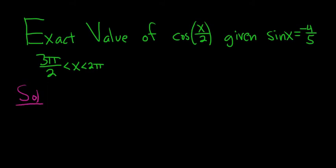In this problem we have to use the half angle identities. The half angle identities for cosine are cosine of x over 2 equals plus or minus the square root of 1 plus cosine x all over 2. The one for sine is very similar except it has a minus sign here.